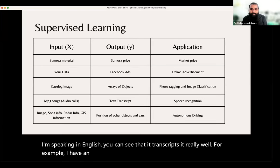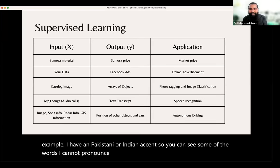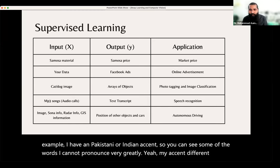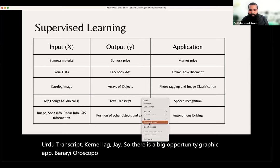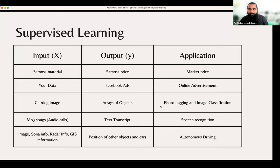For example, I have a Pakistani or Indian accent, so some words I cannot pronounce very correctly, like 'power'. If someone builds an Urdu transcript app, there is a big opportunity. Check how captions are added on top of shorts — that is the opportunity we can grab.